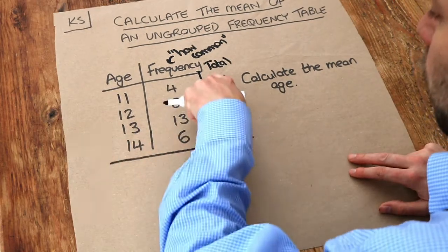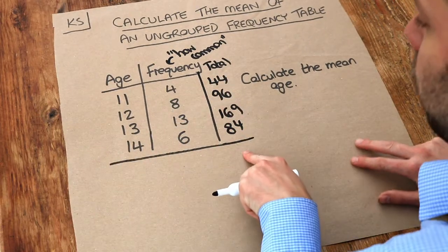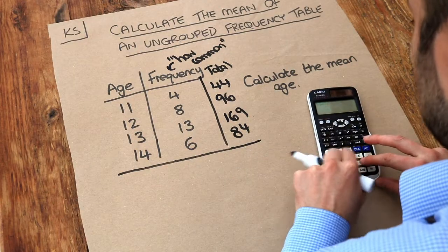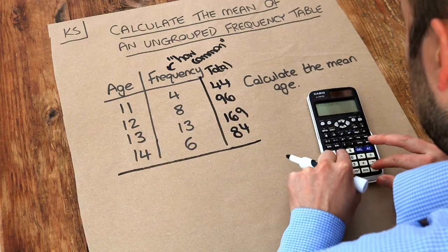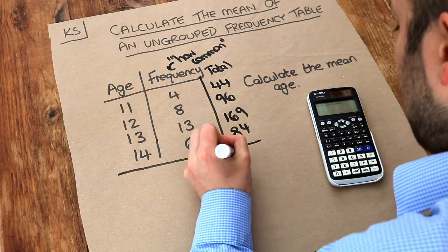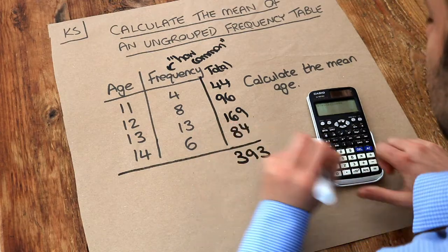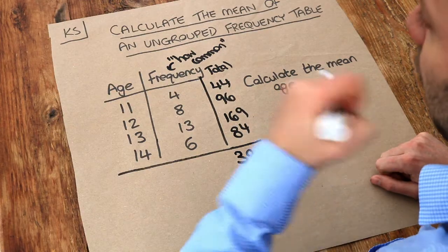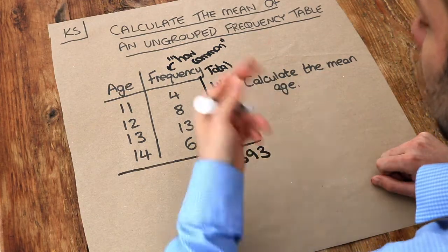And now let's add up all these values to get the total age of everyone. So if we add 44, 96, 169 and 84 we get a total age of 393. And then remember we said we were going to divide the total age by how many people there were. How many values we have.